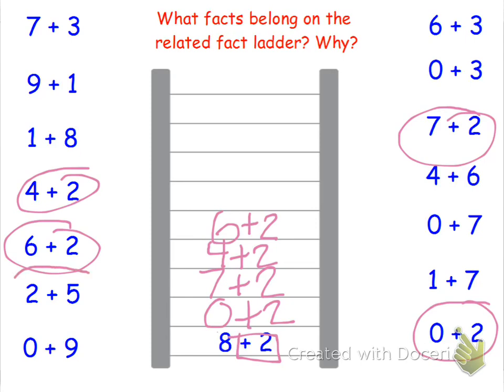It is 2 plus 5. Now, that one's a little tricky because the 2 is in front. The 2 is the first part instead of the second part, like the rest of them are. But all of these are related because they have 2 as a part.